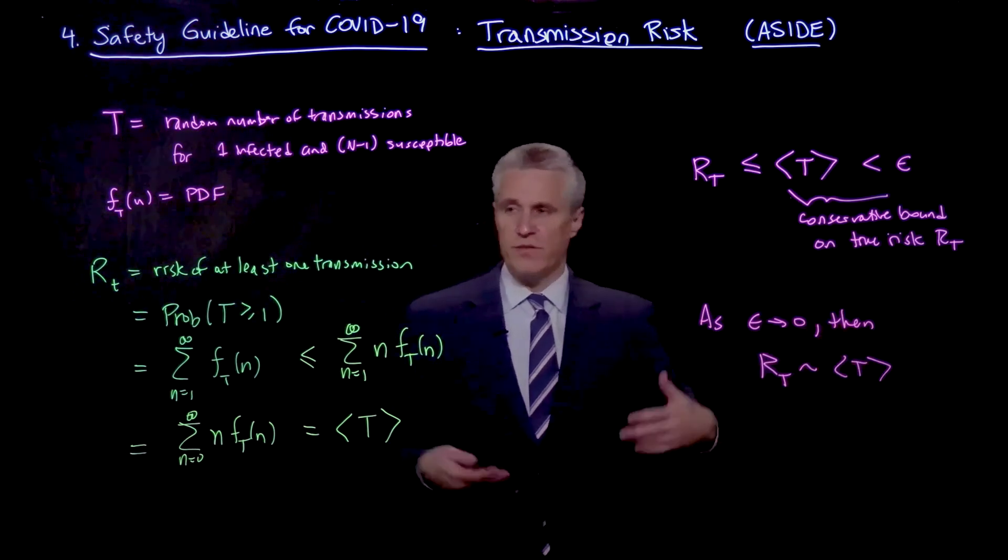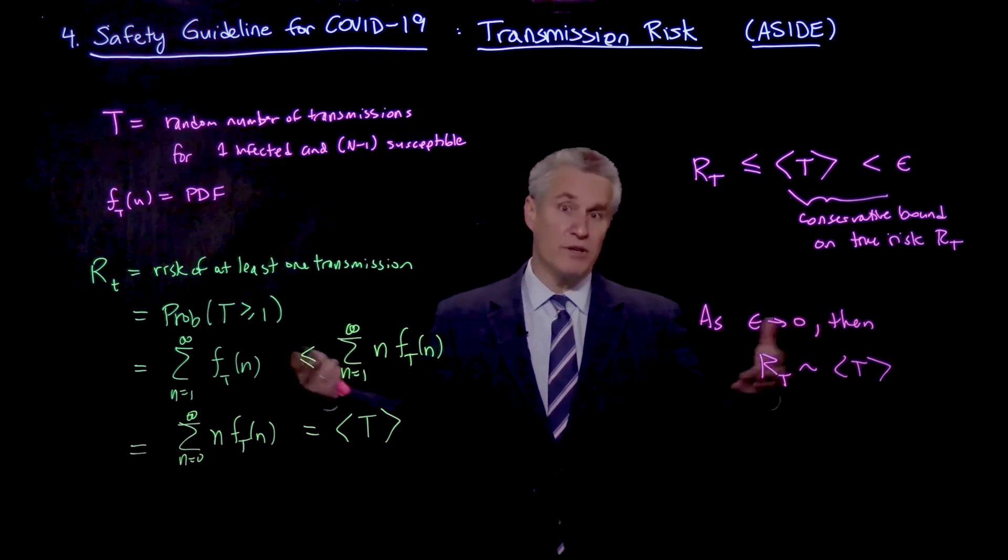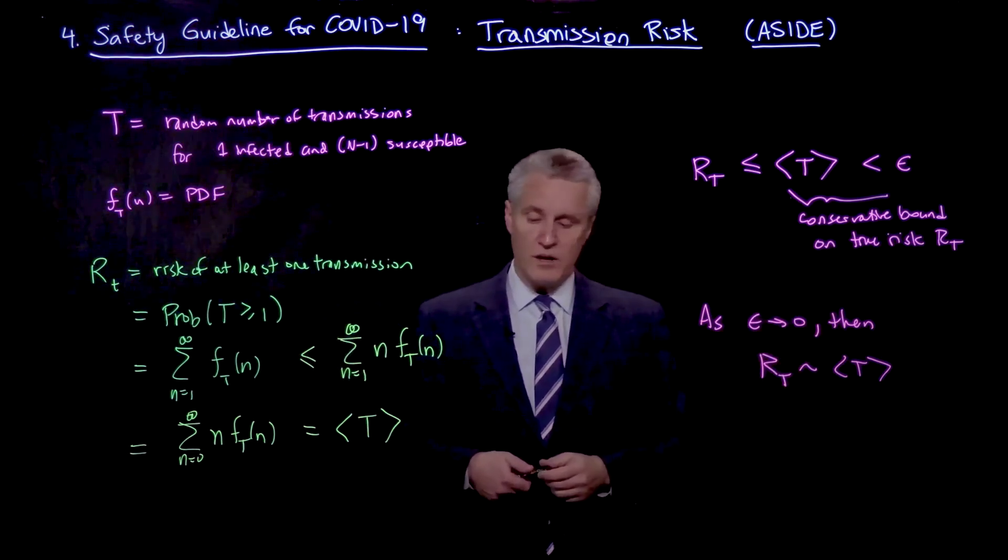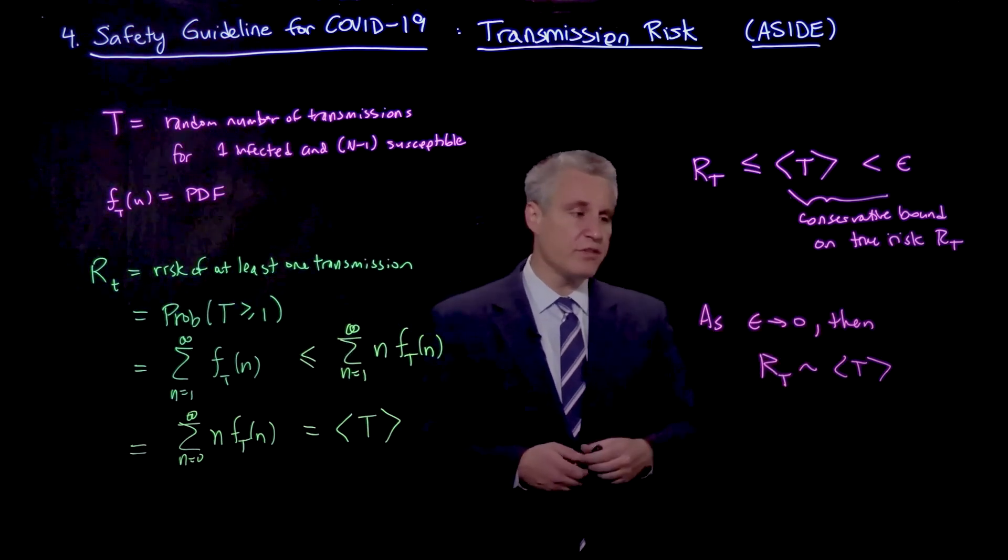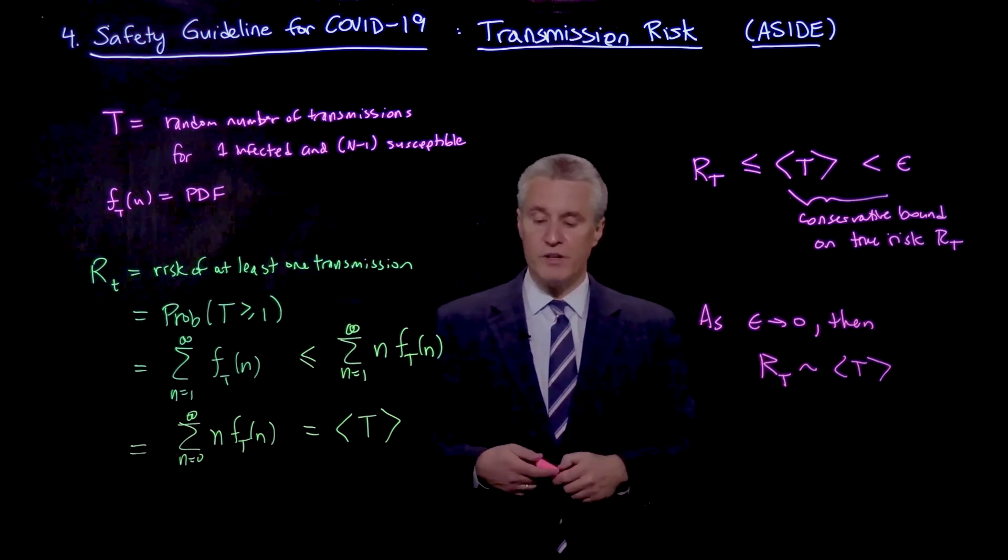And in fact, that's one way you can understand the definition of a probability in terms of an expected number of events. And we are typically thinking of cases where epsilon is much less than 1.